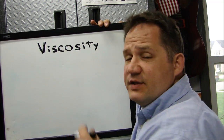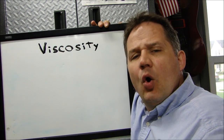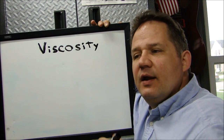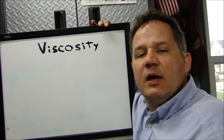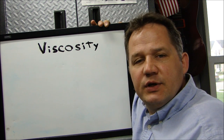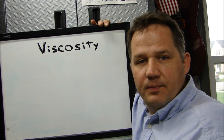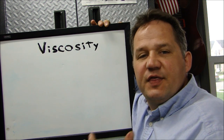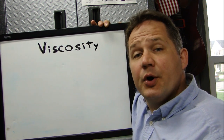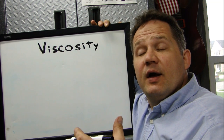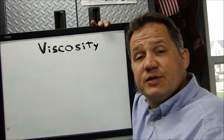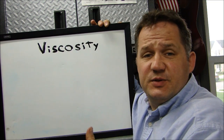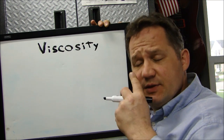I'm going to start with viscosity. Oil is measured in something called viscosity, and viscosity is very simply a fluid's resistance to flow. The more viscous the material, the thicker it is. Like water — water is very thin. Take something like maple syrup — maple syrup is very thick, so it's a more viscous material. The thicker it is, the more viscous the material.